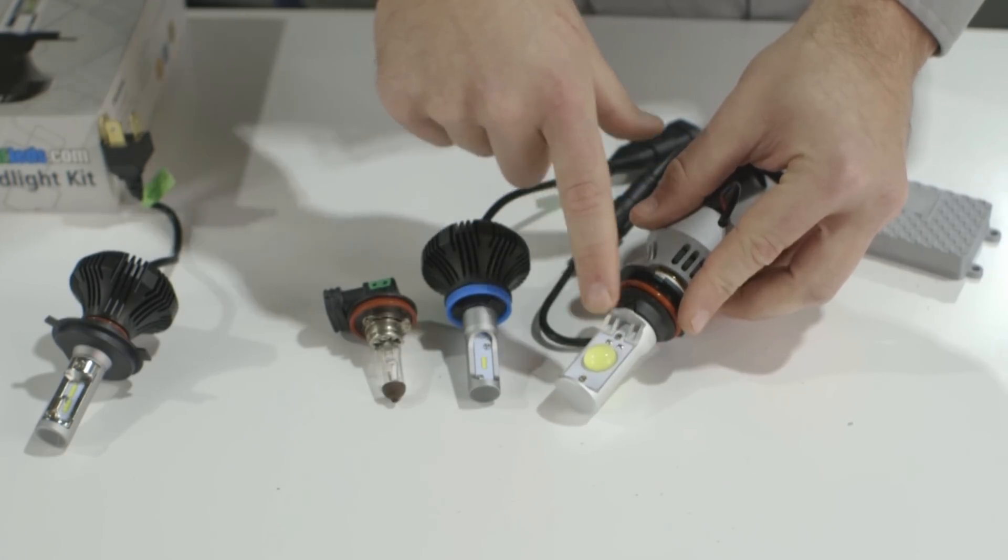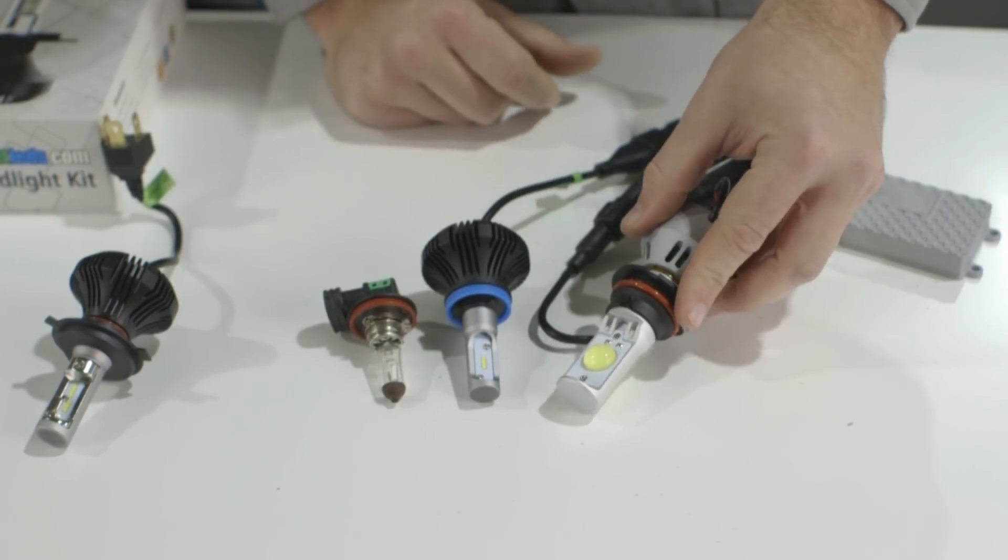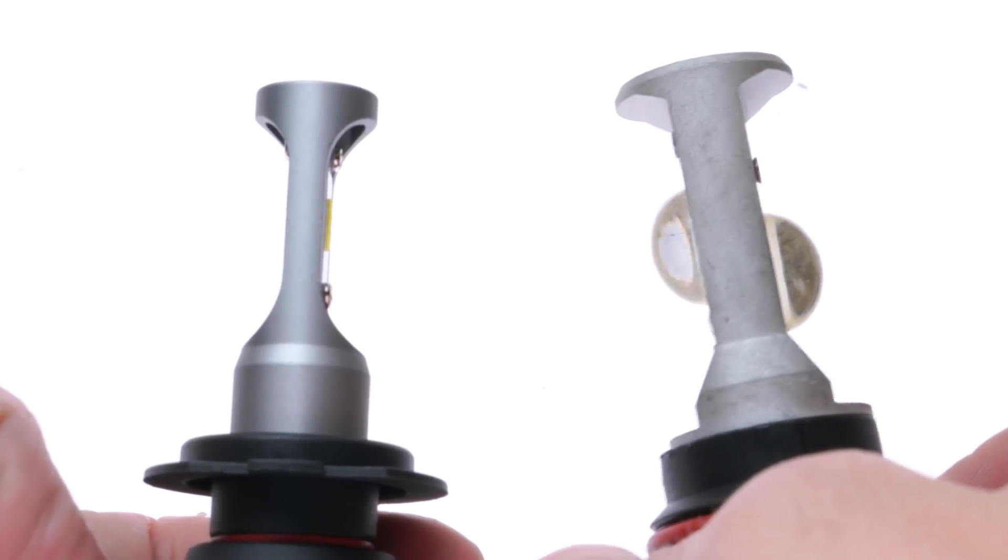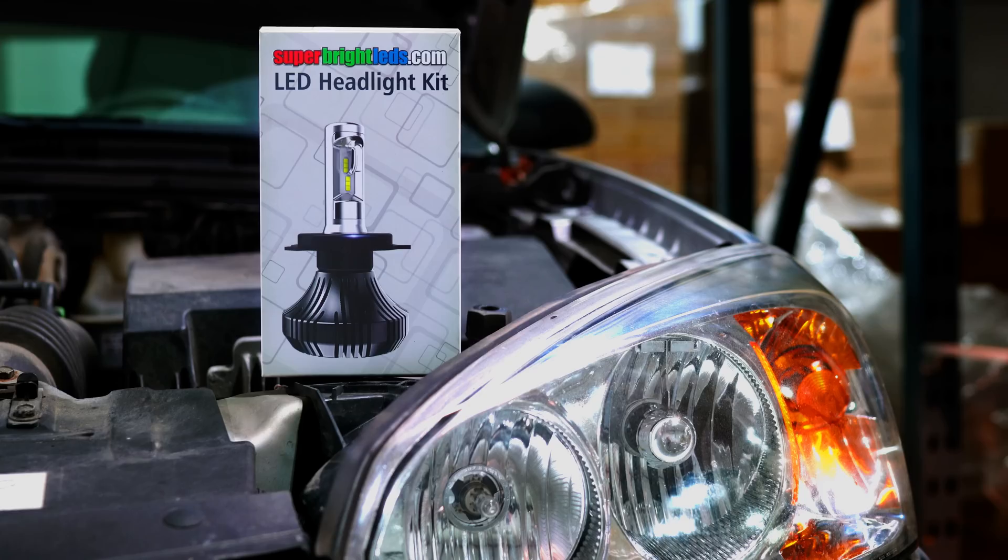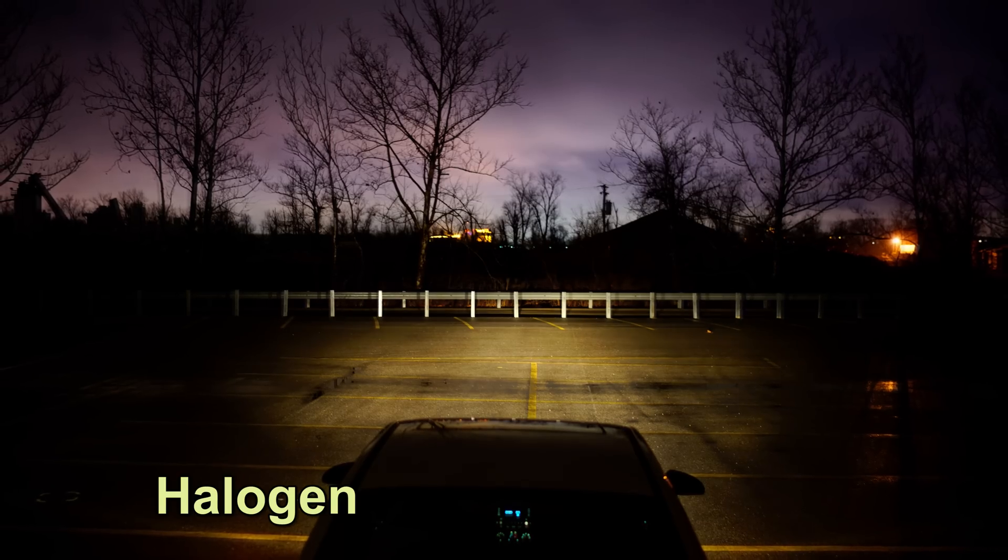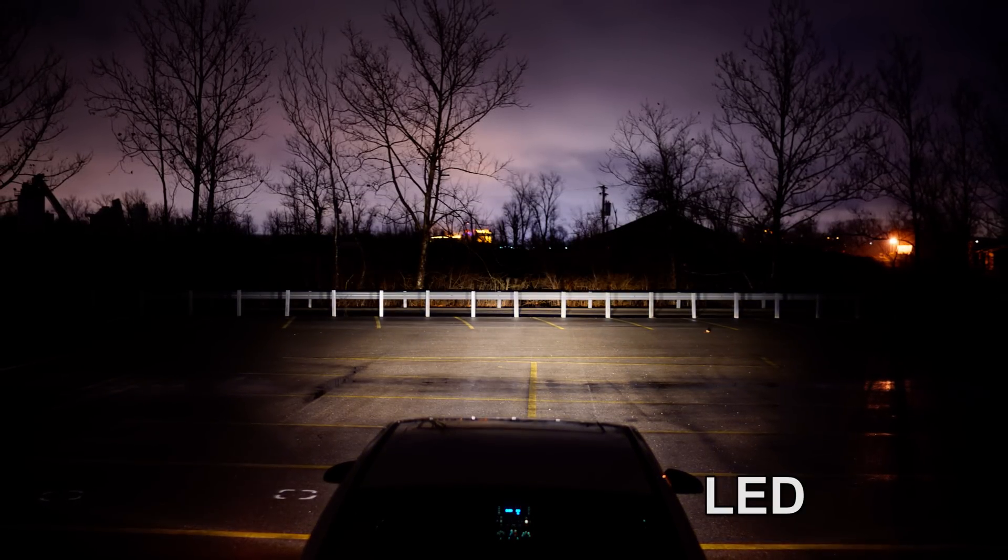For this first generation LED headlight, you'll see that the beam pattern is not going to be the same cutoff and same beam pattern that the halogen bulb is when inside and magnified in the headlamp housing. This does the best job it can to reproduce that beam pattern.